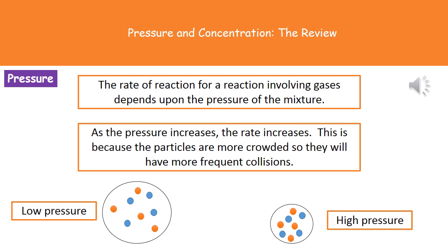Welcome to our review on pressure and concentration and how they affect the rate of a chemical reaction. We're going to look at the two different factors that can affect the rate at which a reaction takes place. First we're going to have a look at pressure. The first thing to bear in mind is that the reaction has to involve gases for pressure to be a factor.